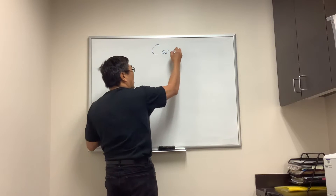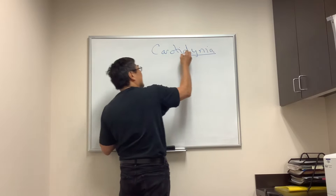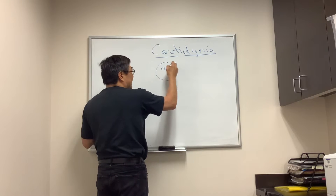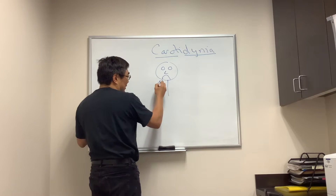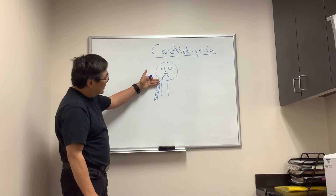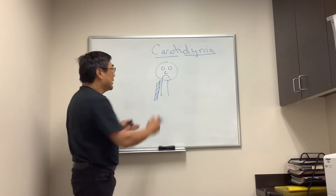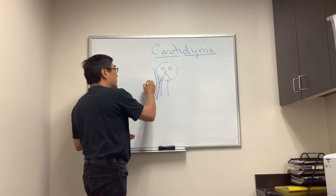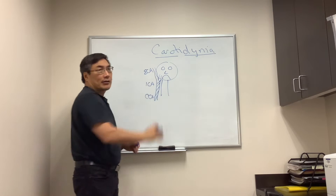We're going to talk about carotid pain, which we call carotidinia — 'dinia' meaning pain, 'carotid' referring to the artery. The pain arises from your carotid artery, which lives in your neck. The internal carotid branches inside the head, while the common carotid also has an external branch and an internal branch — so: common carotid artery, internal carotid artery, and external carotid artery.